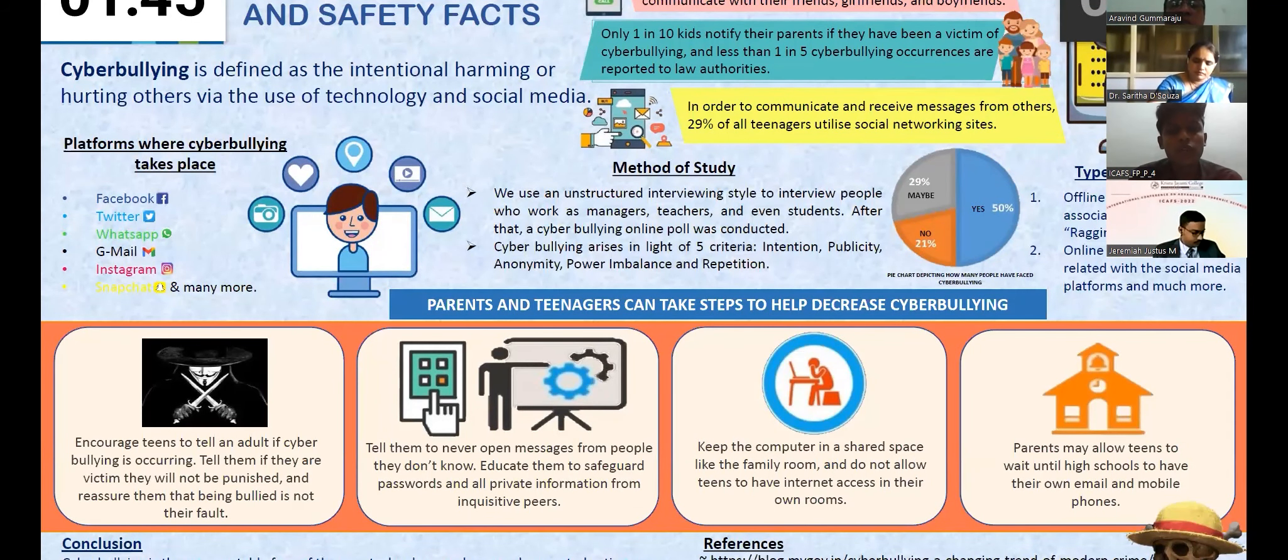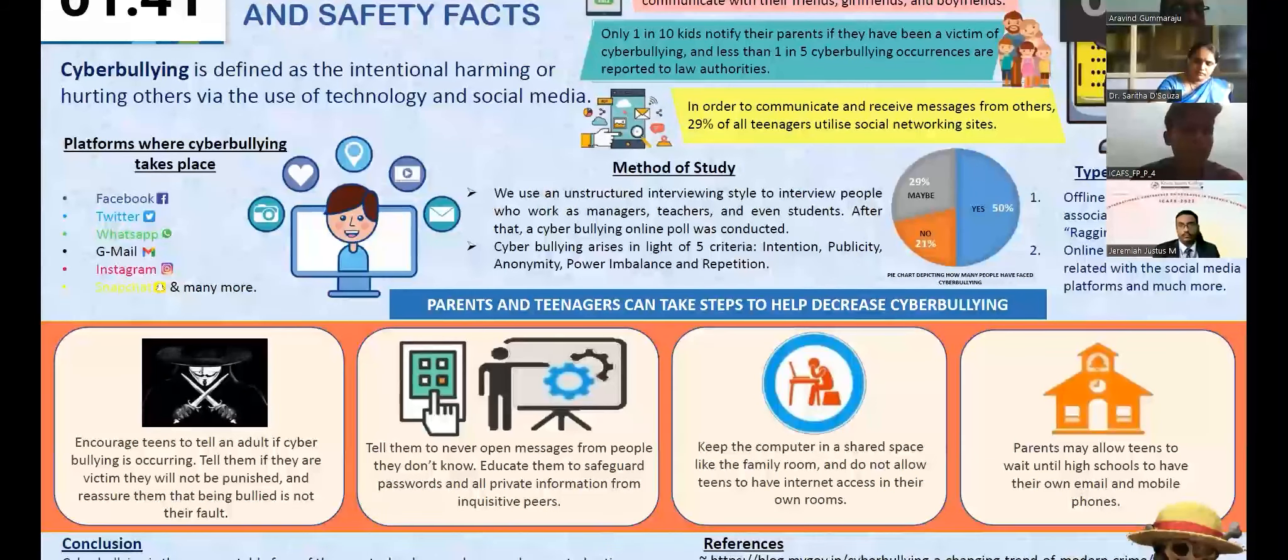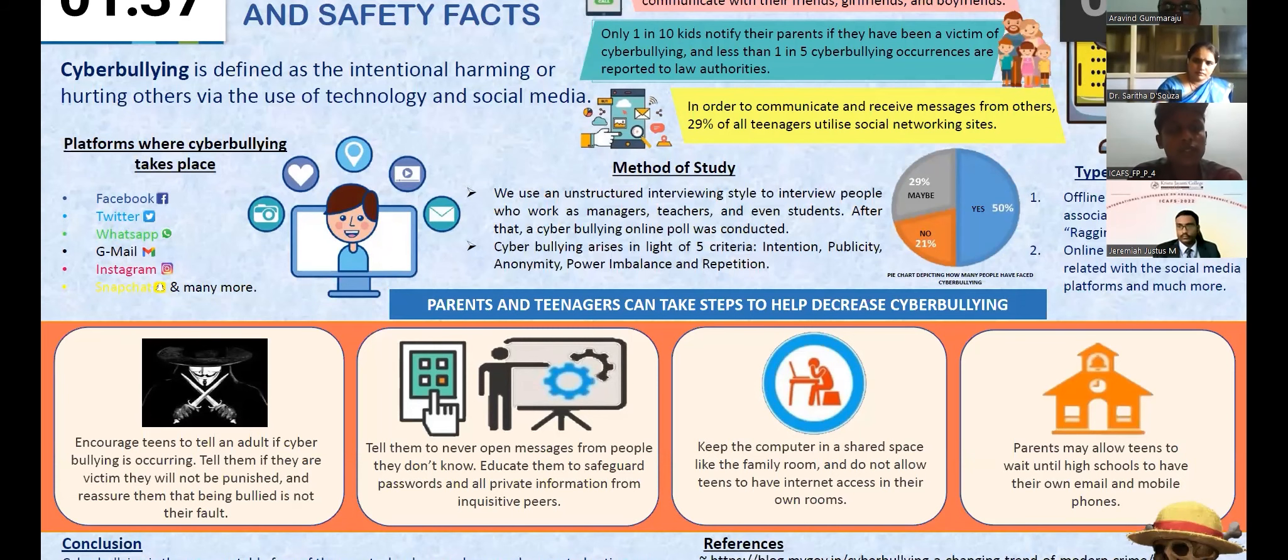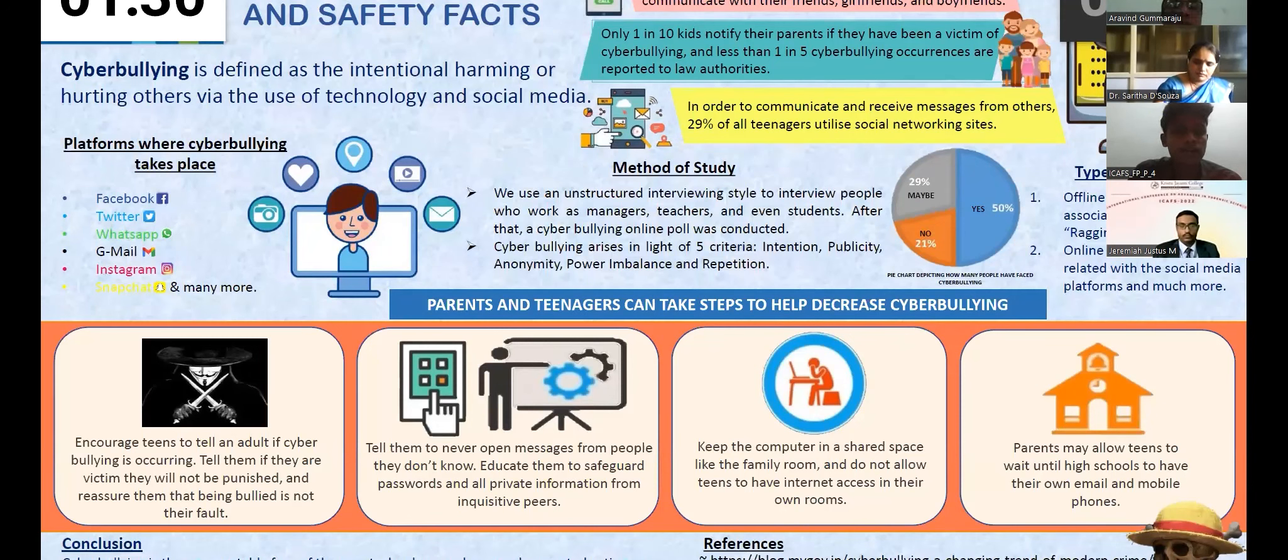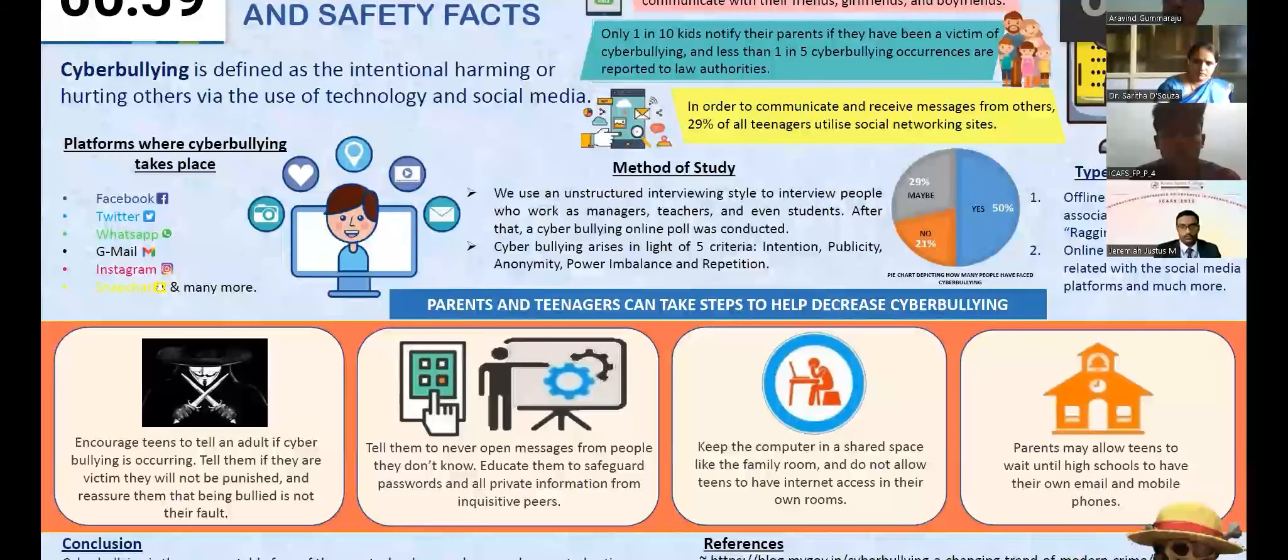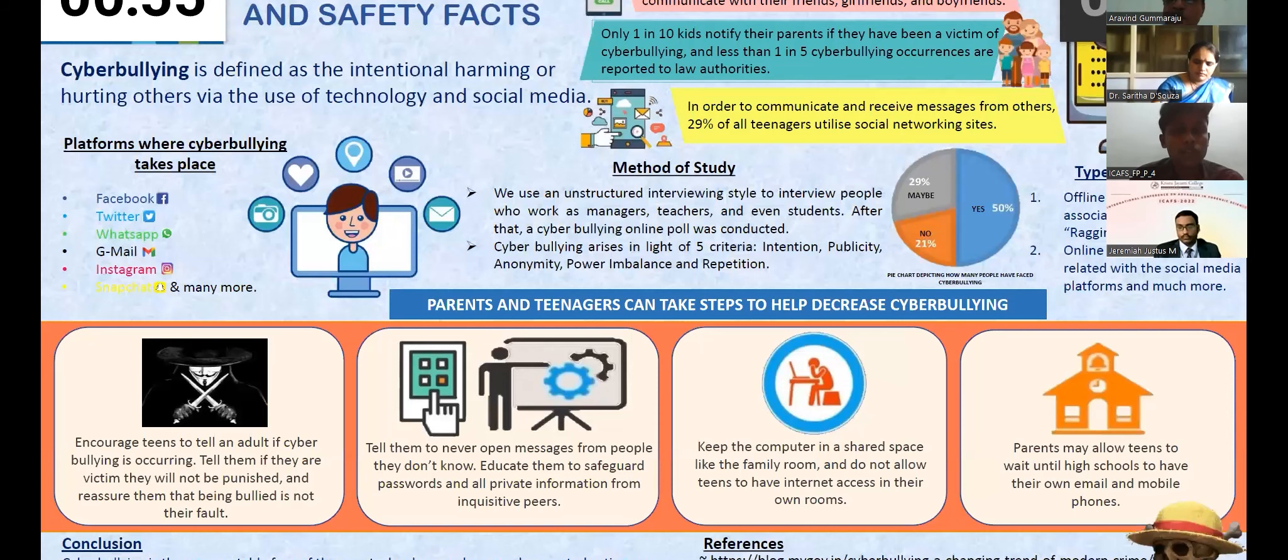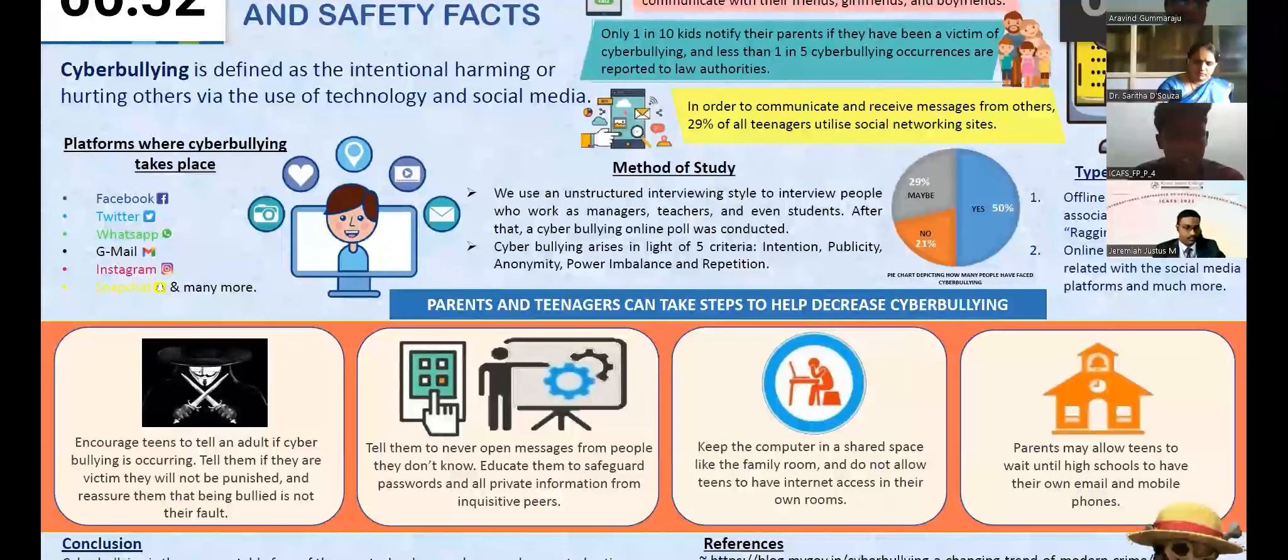So here are some of the tips for preventing or rather reducing cyberbullying that parents and teens can use. First one is encouraging teens to tell an adult if there is such cyberbullying and also tell them that they are not punished and reassure them that being bullied is not their fault. Tell them to never open messages or unknown links from people they don't know. And also educate them to safeguard their passwords and all the private information. Keep the computer in a shared space like the family room and do not allow teens to have internet access in their own room.